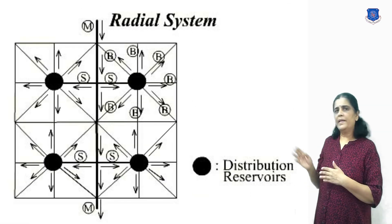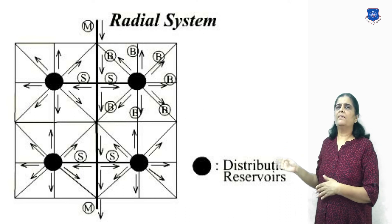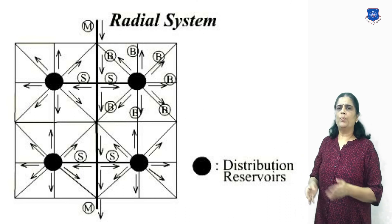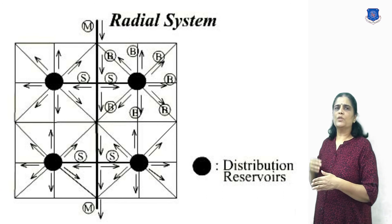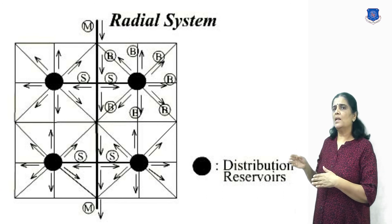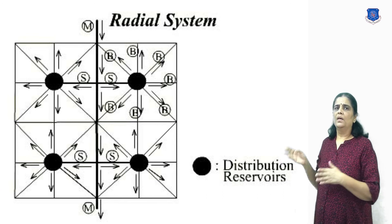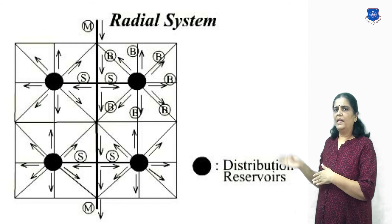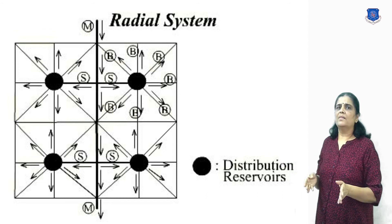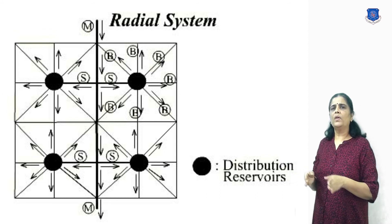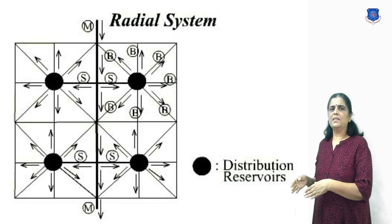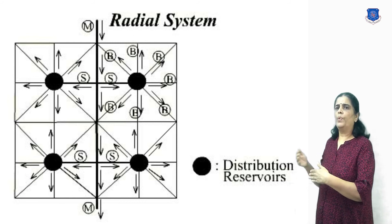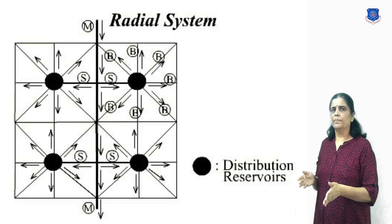In the radial system, the area is divided into different zones. Water is fed into a distribution reservoir kept in the middle zone, and supply pipes are laid radially outward. It gives quick service, and calculation of pipe size is easy in this system.